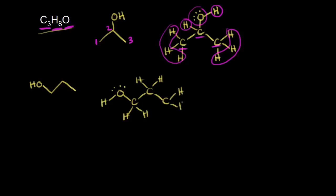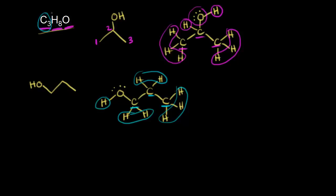So we have three carbons. The carbon on the left is bonded to the oxygen, and the oxygen is bonded to a hydrogen. I'll put in lone pairs of electrons on the oxygen. This carbon needs two hydrogens, the next carbon also needs two, and the carbon on the end needs three. Adding everything up: three carbons, that's C3. Three hydrogens plus two is five, plus two is seven, plus one hydrogen on the oxygen is eight. So C3H8O is the molecular formula.